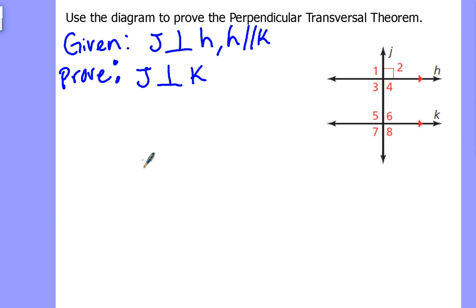So let's take a look here. What do we know? Well, what we know is that J is perpendicular to H and that H is parallel to K. And the goal is going to be, can we prove that J is also perpendicular to K?